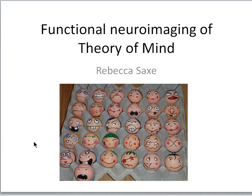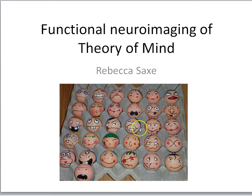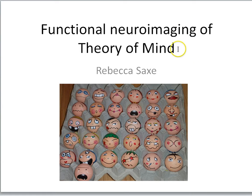In previous lessons, we learned about the face area in the right fusiform gyrus that seems to selectively respond to faces — activity correlated to the conscious perception of faces. Now, faces are an observable feature of a person. But behind every face is a mind animating that face — a set of mental states like beliefs, desires, and intentions. In this lesson, we'll look at how functional neuroimaging has been used to reveal those parts of our brain involved in mentalizing, what is called theory of mind.